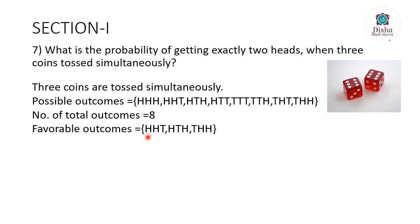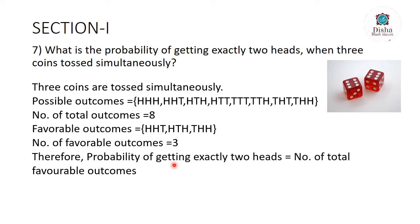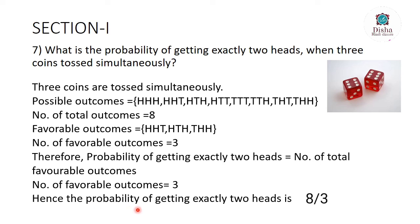The total number of outcomes is 8. The favorable outcomes — those with exactly 2 heads — are HHT, HTH, and THH, giving 3 favorable outcomes. The probability of getting exactly 2 heads = number of favorable outcomes / total outcomes = 3/8.